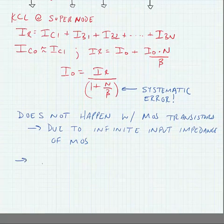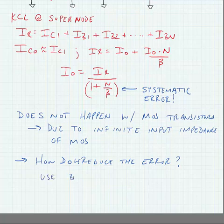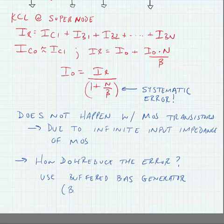So, the question we ask is, how do we reduce this error? And in the next set of slides, we will look at using a buffered bias generator. This is sometimes called a beta helper.